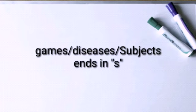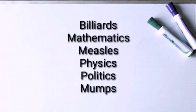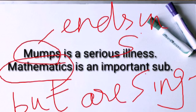Names of certain games, diseases, and branches of knowledge which end in -s are singular. For example: billiards, mathematics, missiles, physics, politics, and mumps. 'Mumps is a serious illness.' 'Mathematics is an important subject in the modern world.' In both sentences, the subjects mumps and mathematics end in -s, but the following verb is singular.